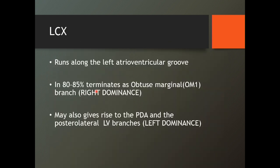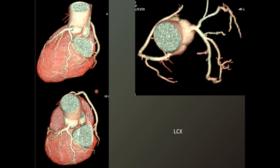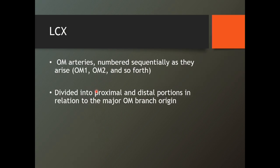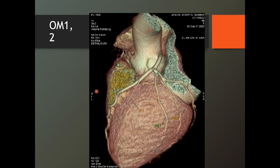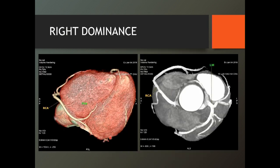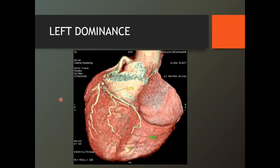The circumflex runs along the left atrioventricular groove — not interventricular. In 80 to 85% of cases it terminates into the obtuse marginal branch — that is called right dominance. While it might give rise to the PDA — which normally comes from the RCA — and the left posterolateral branch; that is called left dominance. Important to know from the treatment point of view. Circumflex gives rise to OM arteries numbered sequentially — OM1, OM2, OM3. It is divided into proximal and distal portions related to the major OM branch.